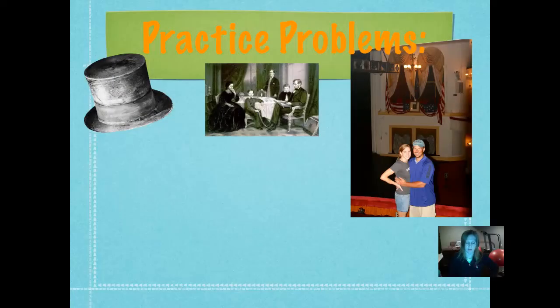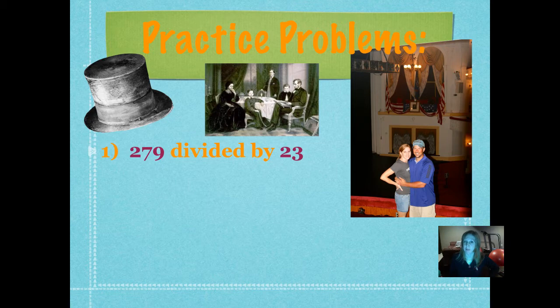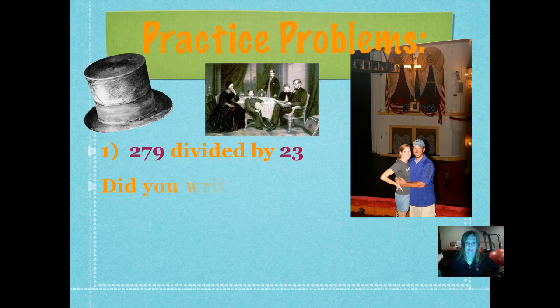So here is our first practice problem. 279 divided by 23. Use doubles division to figure that out. Check your work using multiplication and push play when you're ready. Did you write 12 remainder 3? Let's see how we did that one.